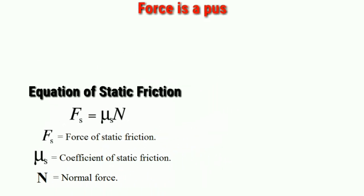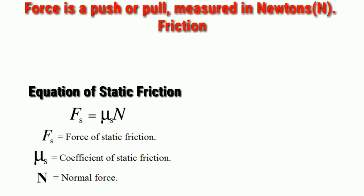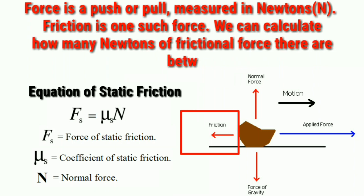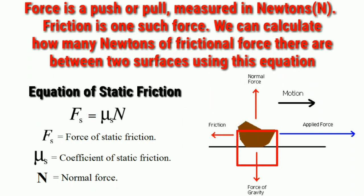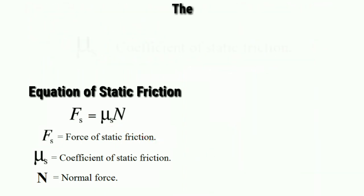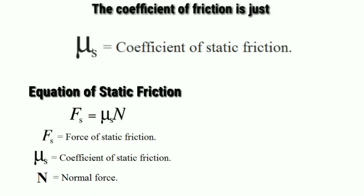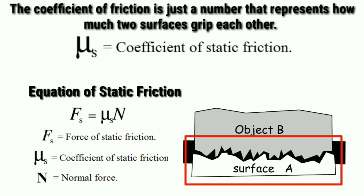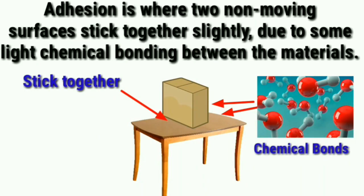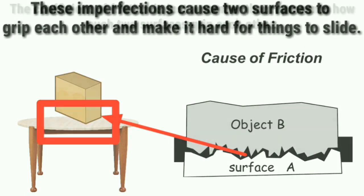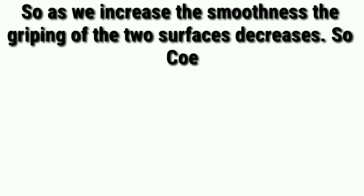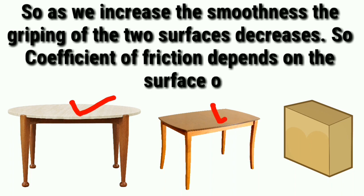Now the equation for static friction. Force is a push or pull measured in newtons, and friction is one such force. We can calculate the newtons of frictional force between two surfaces using an equation. The coefficient of friction is a number that represents how much two surfaces grip each other due to adhesion or surface imperfections. As smoothness increases, the gripping decreases. So the coefficient of friction depends on the surface of the objects.